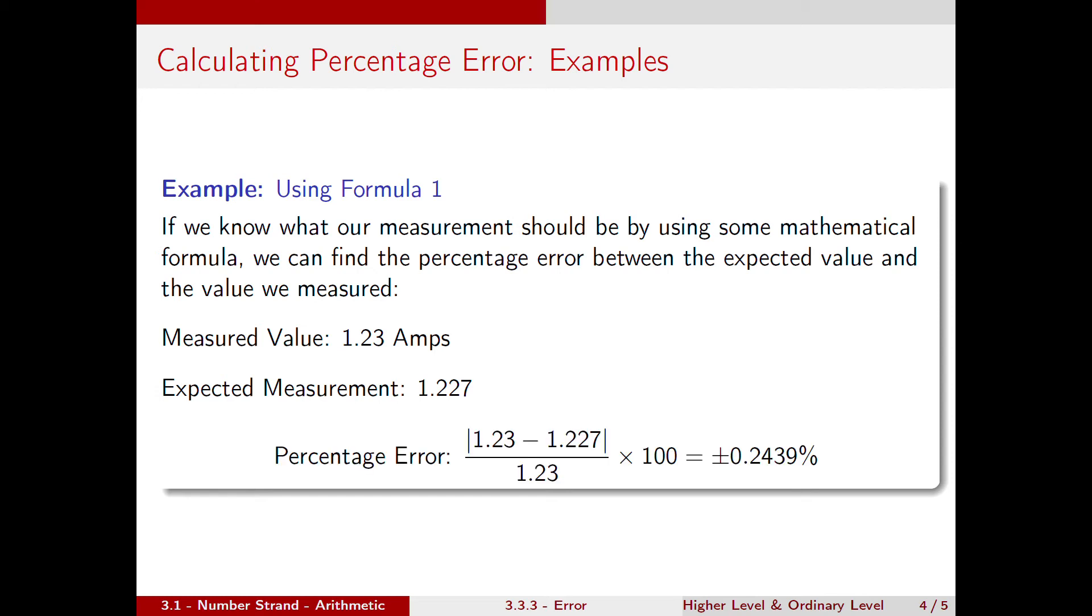The percentage error would be the absolute value of 1.23 minus 1.227, all over 1.23, multiplied by 100, which gives us plus or minus 0.2439%.